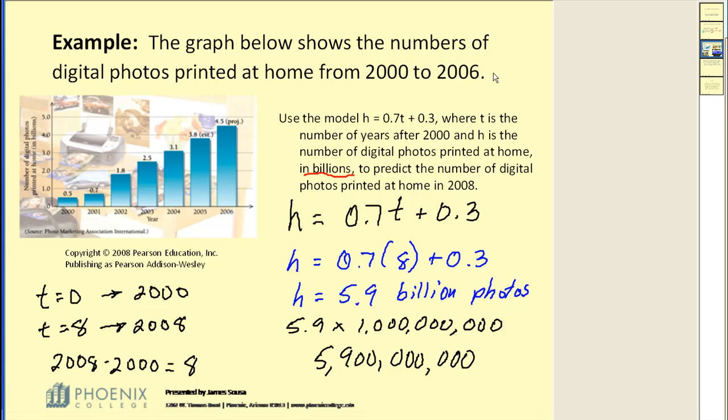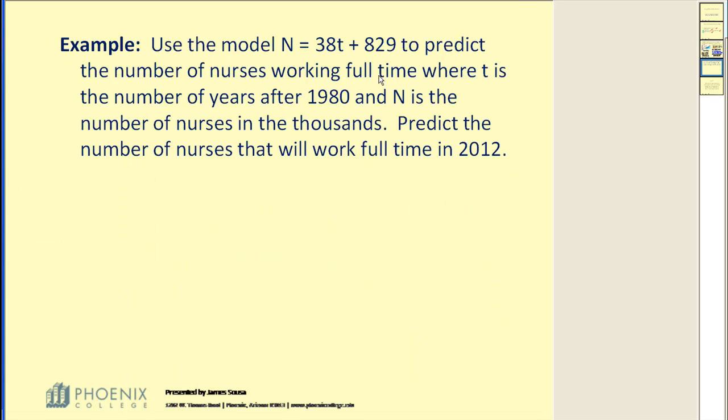Let's take a look at one more example. Use the model N equals 38T plus 829 to predict the number of nurses working full-time, where T is the number of years after 1980, and N is the number of nurses in the thousands. Predict the number of nurses that will work full-time in 2012.